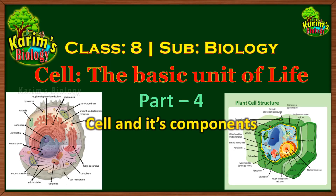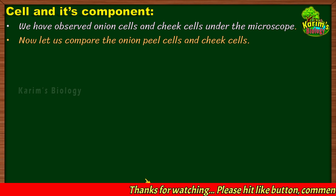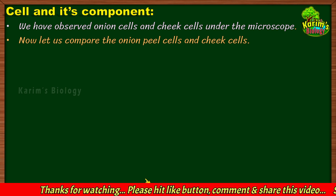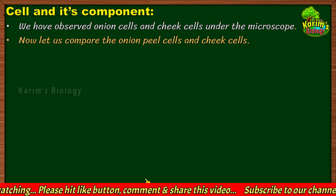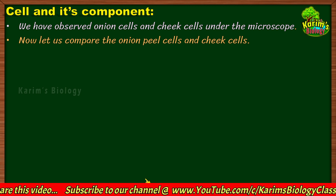Hello dear students, welcome back to Karim's Biology. From class 8 biology we have been discussing the lesson 'Cell: The Basic Unit of Life.' In this session I am going to explain about the cell and its components — how cells appear under a microscope and what different components are present in the cell. Let us start the session. We have observed onion cells and cheek cells under a microscope. In my previous class I showed you pictures of onion cells and cheek cells and exactly how they appear.